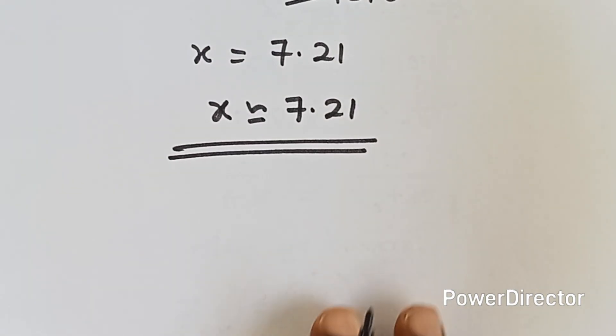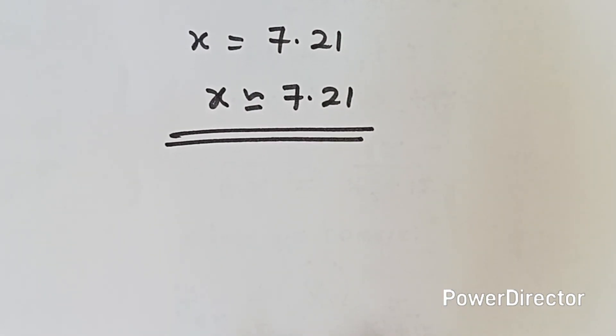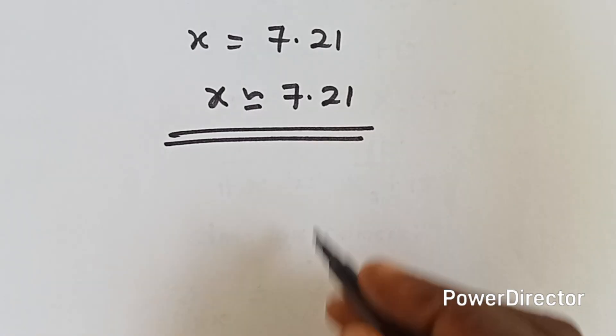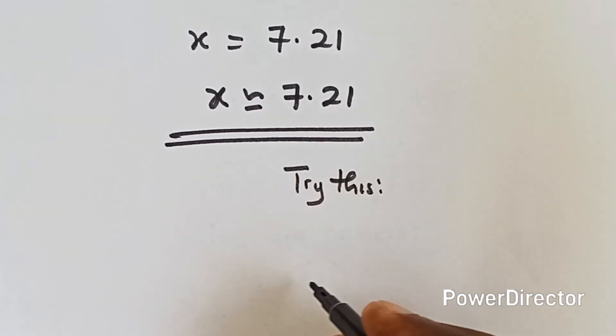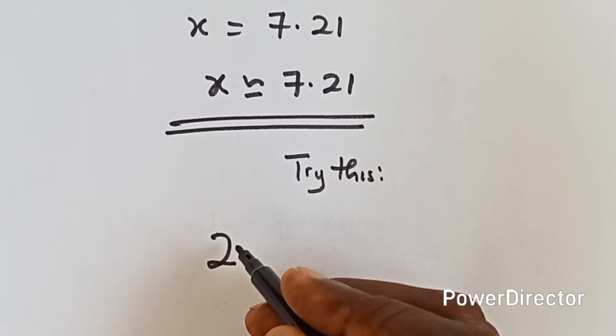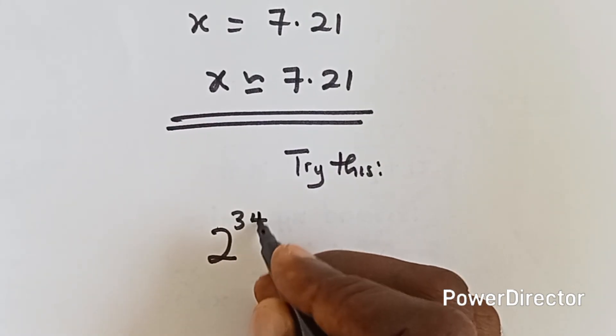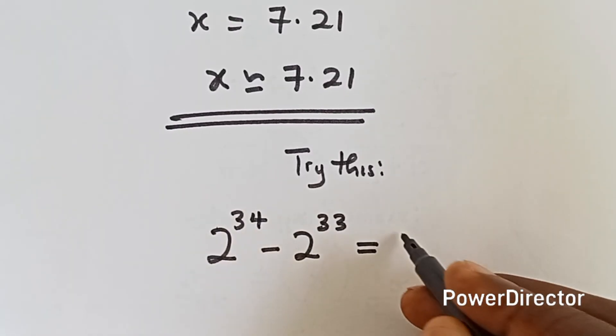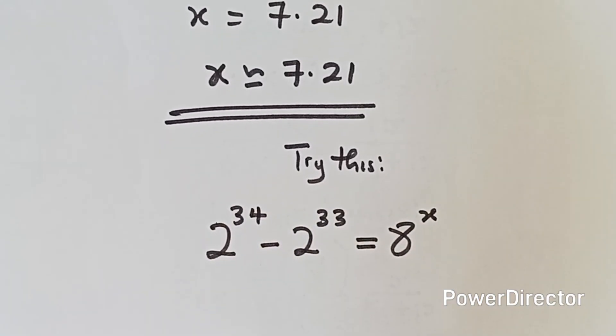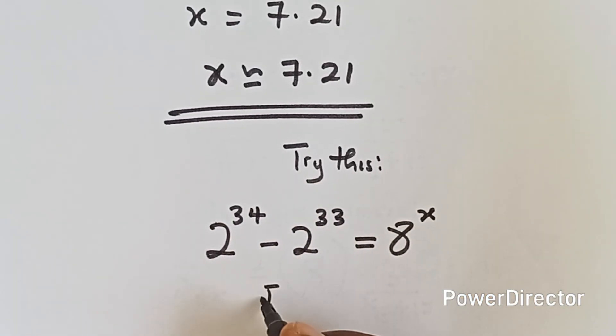All right, so now let's solve something similar to that. Okay, using the same method. Let's try this. We have 2 raised to the power 34 minus 2 raised to the power 33 equals to 8 raised to the power x. All right, so let's find x.